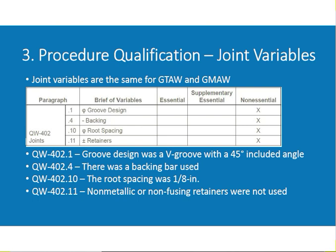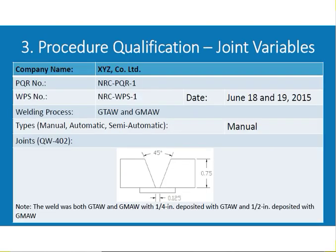This is the procedure qualification joint variable summary. The welding process is GTAW and GMAW, type is manual. The joint shows a backing strip with a root gap of 0.125 inch, 45-degree angle, and 0.75 inch thickness. The weld was both GTAW and GMAW — one quarter inch deposited with GTAW and half inch deposited with GMAW.